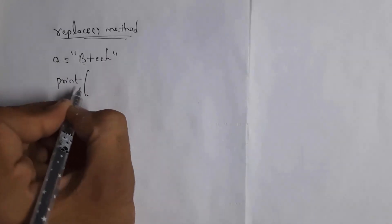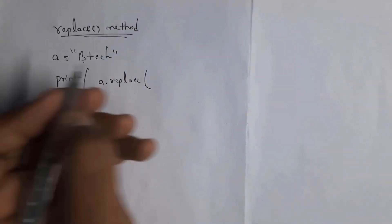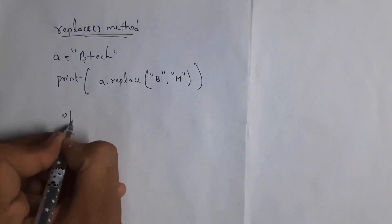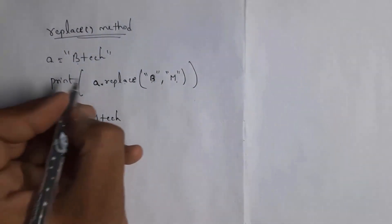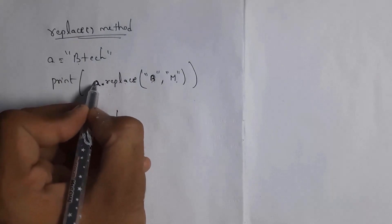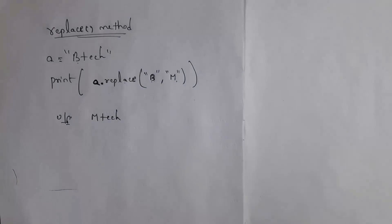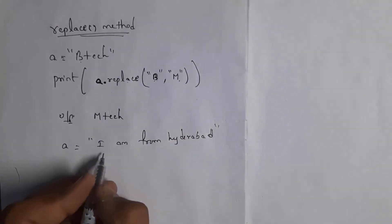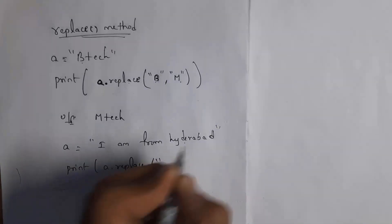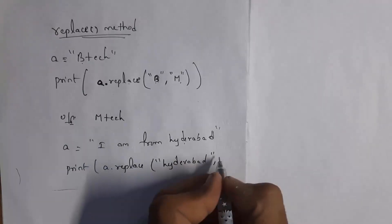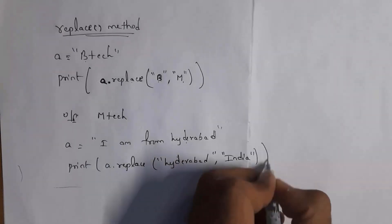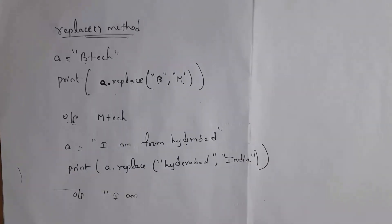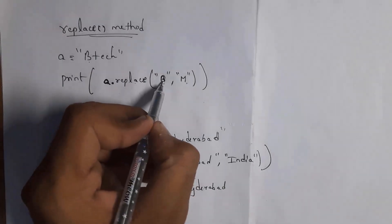By using the replace method you can replace any string — either a single character or multiple characters. For example, with a equal to 'B tech', I want to replace B with M. Write print a.replace('B', 'M') and you will get output 'M tech'. For multiple characters, if a equal to 'I am from Hyderabad' and you want to replace Hyderabad with India, write print a.replace('Hyderabad', 'India') and you will get output 'I am from India'.